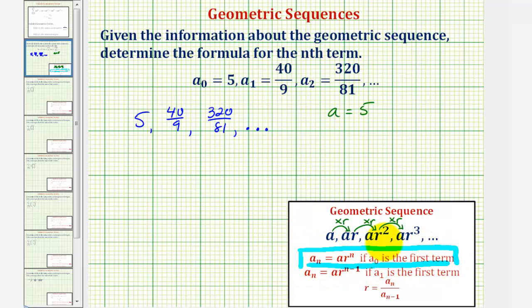There are two ways to find r, the common ratio. Using this formula here, we can take any term in the sequence, a sub n, and divide by the previous term, a sub n minus one. The second method would be to just analyze the sequence. Let's take a look at both methods.